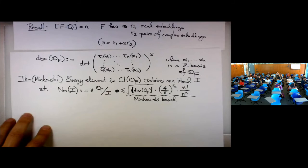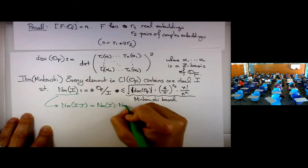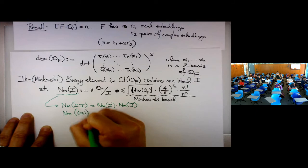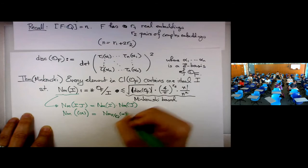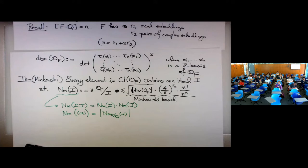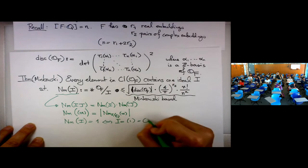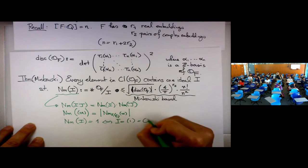This is called the Minkowski bound, and for number fields of low degree it turns out to be a pretty good bound. The norm of an ideal is multiplicative. The norm of a principal ideal (a) is the absolute value of the norm of the generator down to Q. And the norm of the whole ring OF is 1.